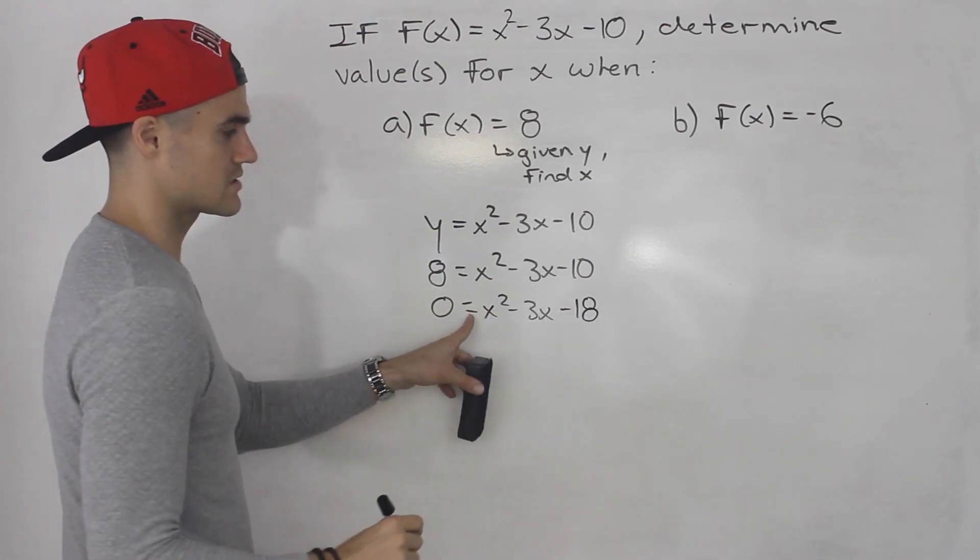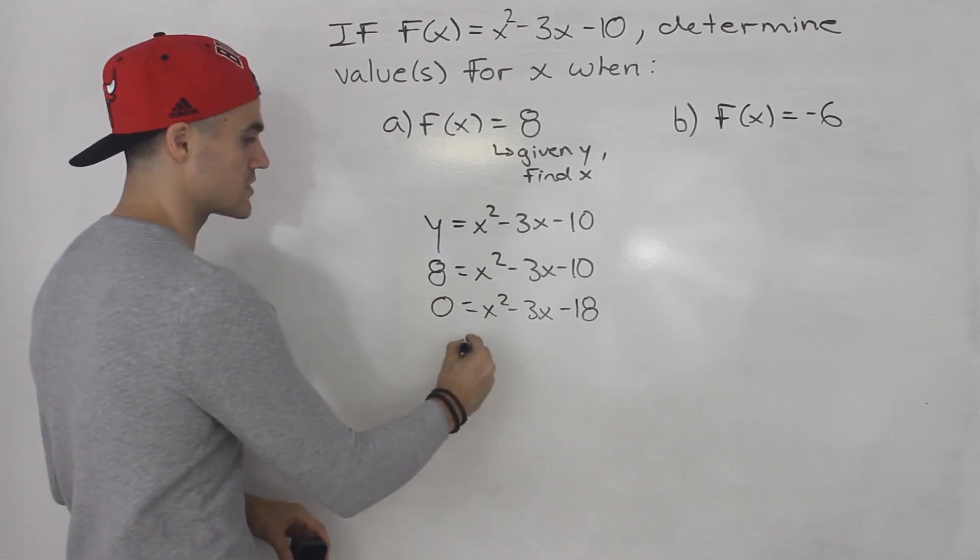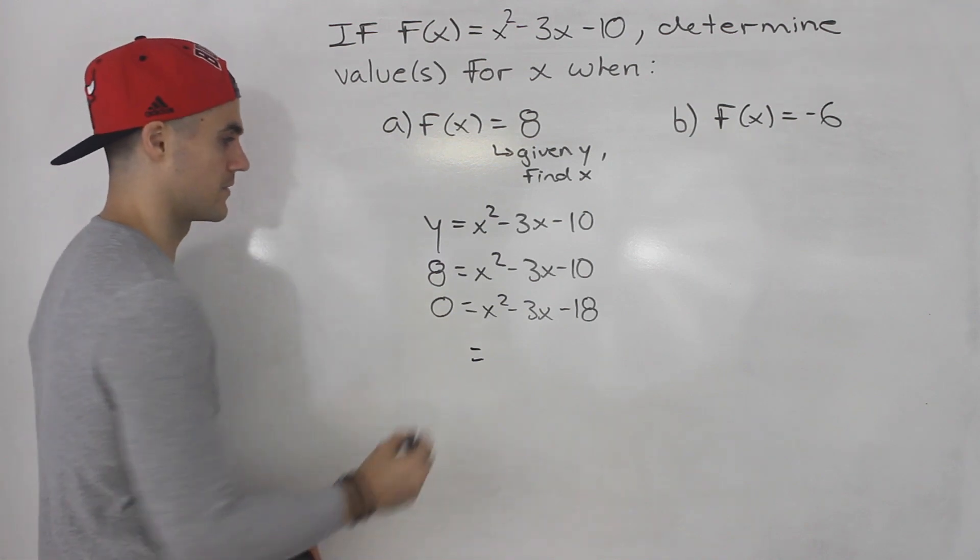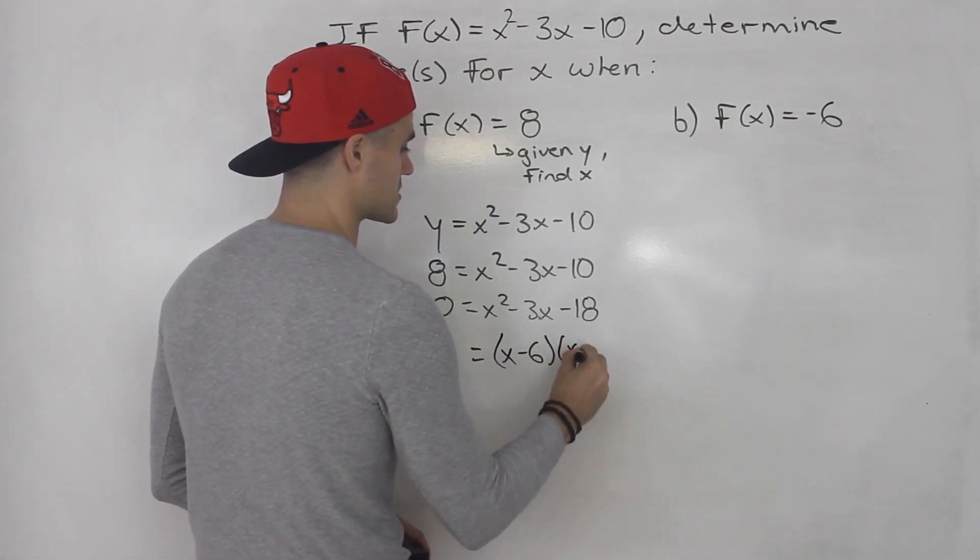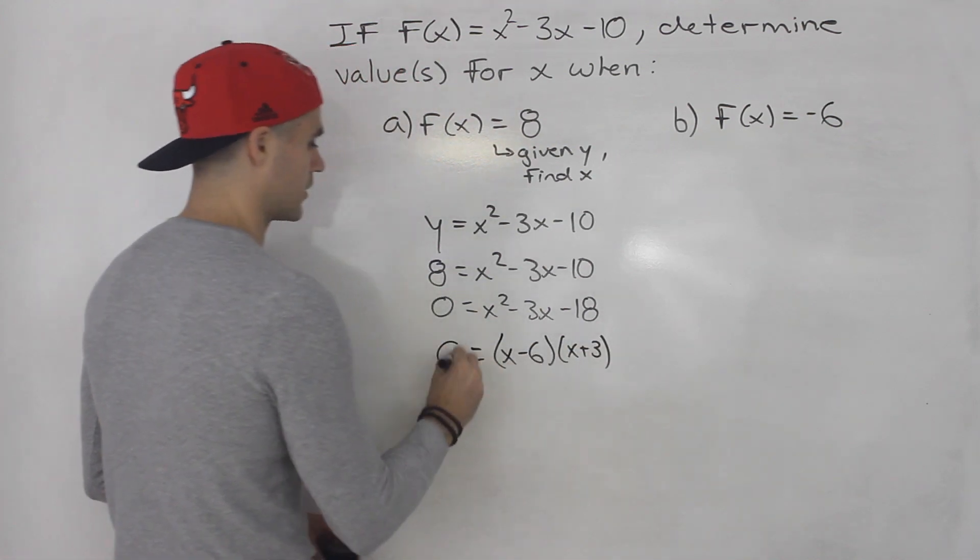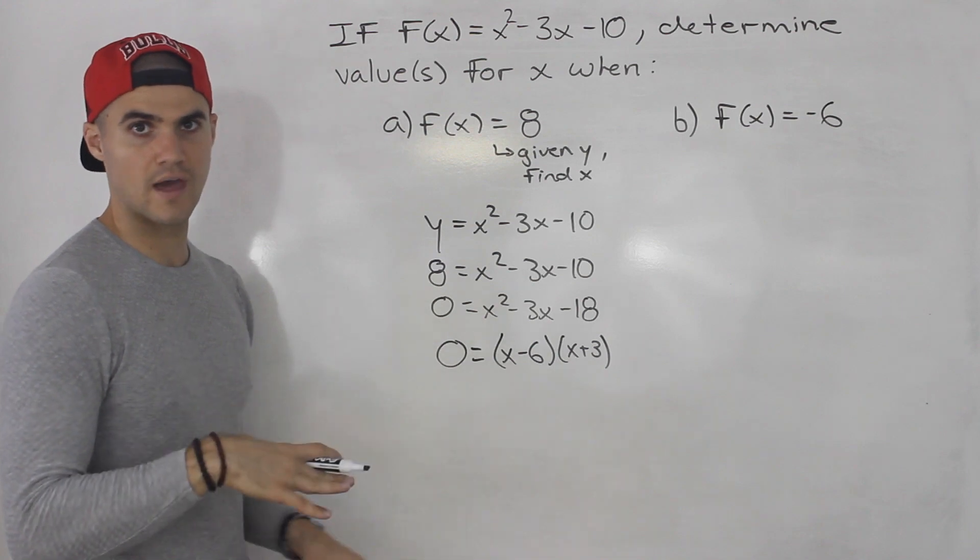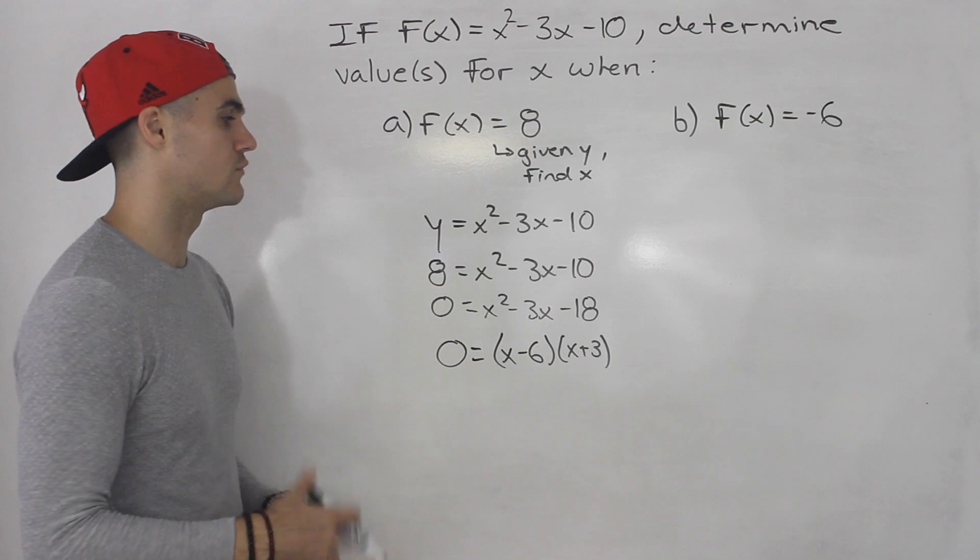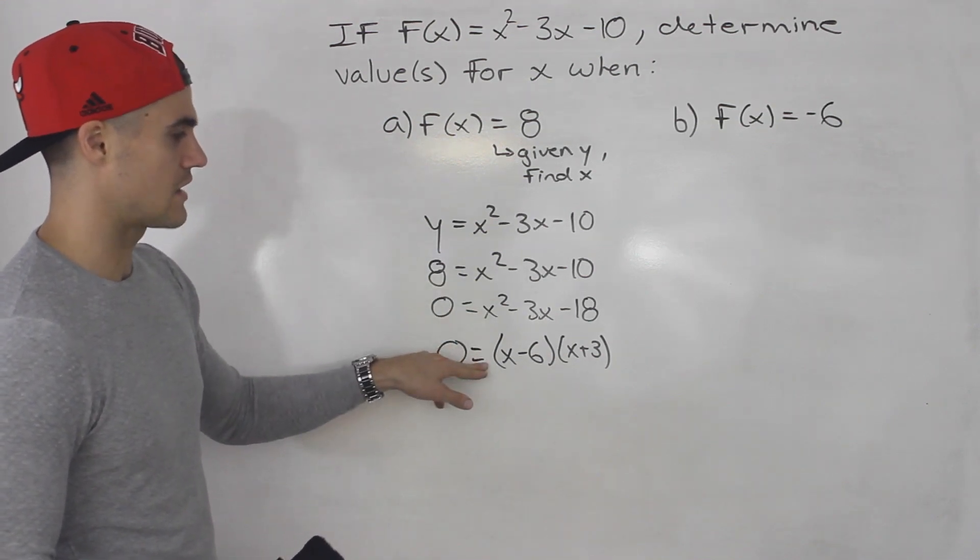So now notice this is just a quadratic equation that you could solve. If you remember from the previous grade you could solve this with factoring or the quadratic formula. This actually factors smoothly into (x - 6)(x + 3). I'm not going to go into too much detail how this factoring works. You may have to review that from the previous grade. We're also going to be doing an entire chapter on quadratics.